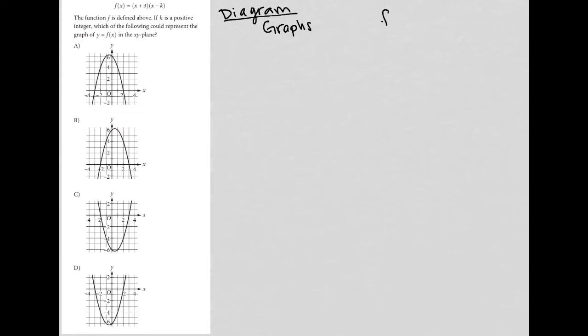If we start with the function that's been provided to us, this f of x equals x plus three times x minus k, and then I look at what's given in the question, which tells us that the function f is defined above. If k is a positive integer, which of the following could represent the graph of y equals f of x in the xy plane? In essence, the question is asking us, how do you graph this if you have an unknown k value?